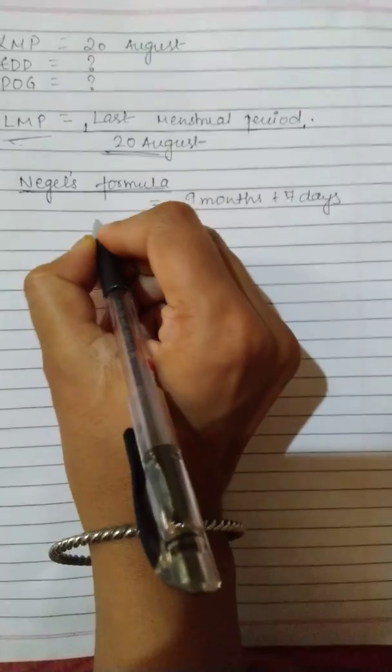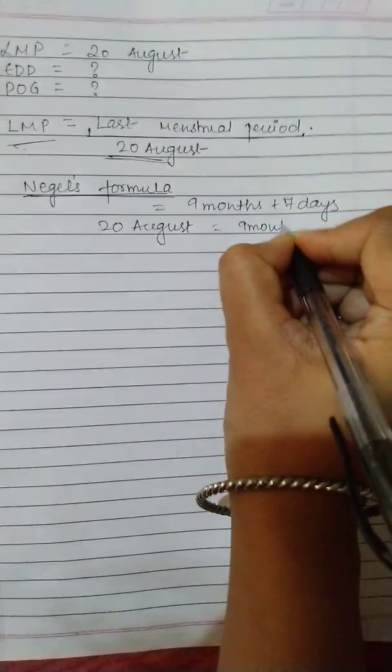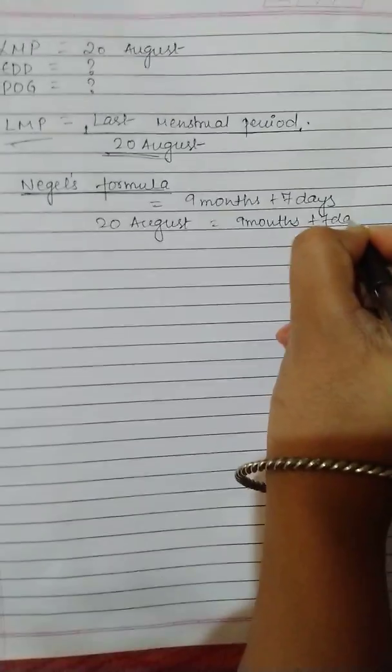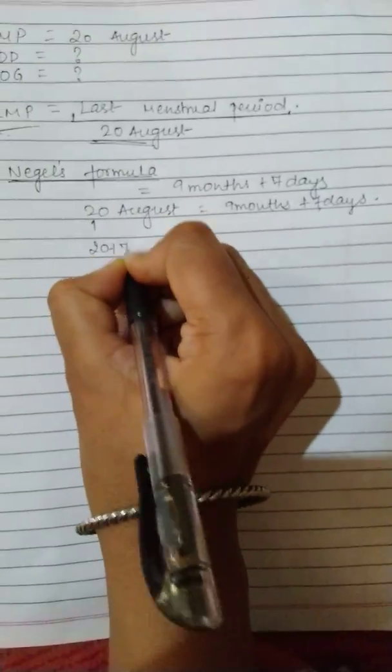So how we'll do that? The LMP of the patient is suppose 20 August. So what we'll simply do, we'll simply add nine months plus seven days. So this seven day will be added here. So 20 plus seven that